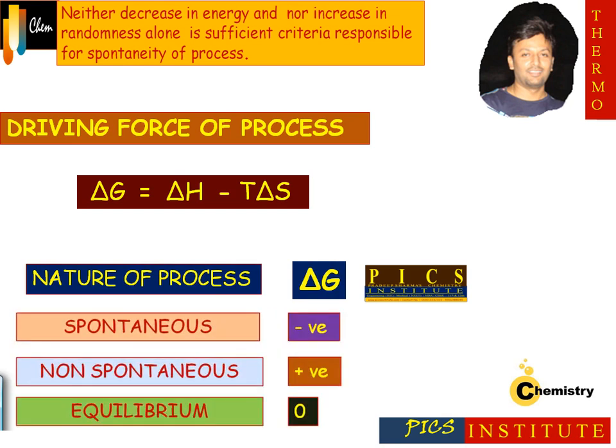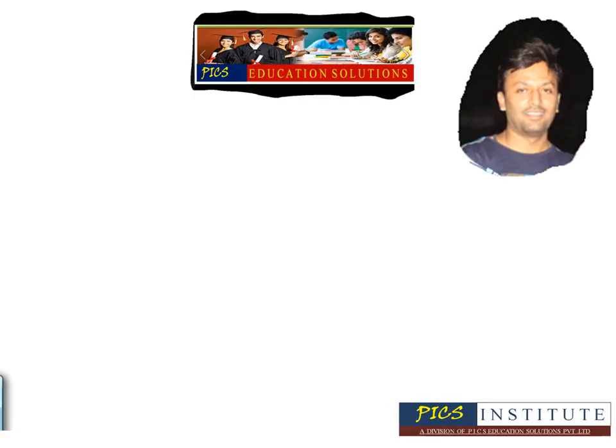Any process for which ΔG is negative is spontaneous. If ΔG is positive the process will be non-spontaneous, and if ΔG is zero the process will be in equilibrium. In this way we can understand spontaneous and non-spontaneous processes, the various driving forces for spontaneity, and what the actual driving force for spontaneity of a process is.